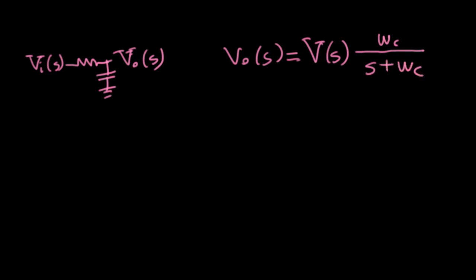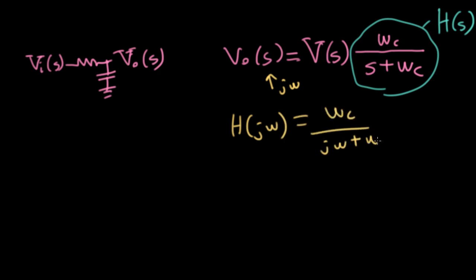We could plug in j omega for s in this function. So let's call this the transfer function, aka system function, h of s. If we plug in j omega for s, we get the frequency response. And conveniently, if we plug in zero for omega, we get one. So DC passes through without any problem, without any change.